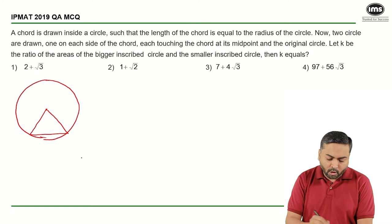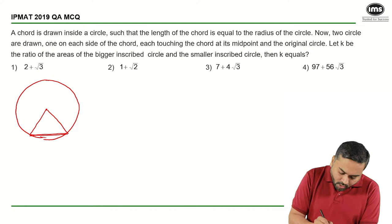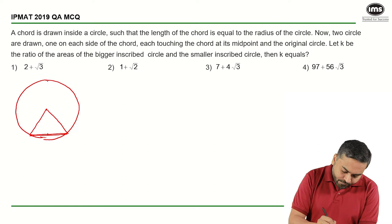Now, two circles are drawn one on each side of the chord, one above this chord and one below this chord. Each touching the chord at its midpoint, so they touch here basically and the original circle. So basically the diameter of a larger circle will be this and that of the smaller circle will be this. This will be the diameter of the larger circle. This will be the diameter of a smaller circle.